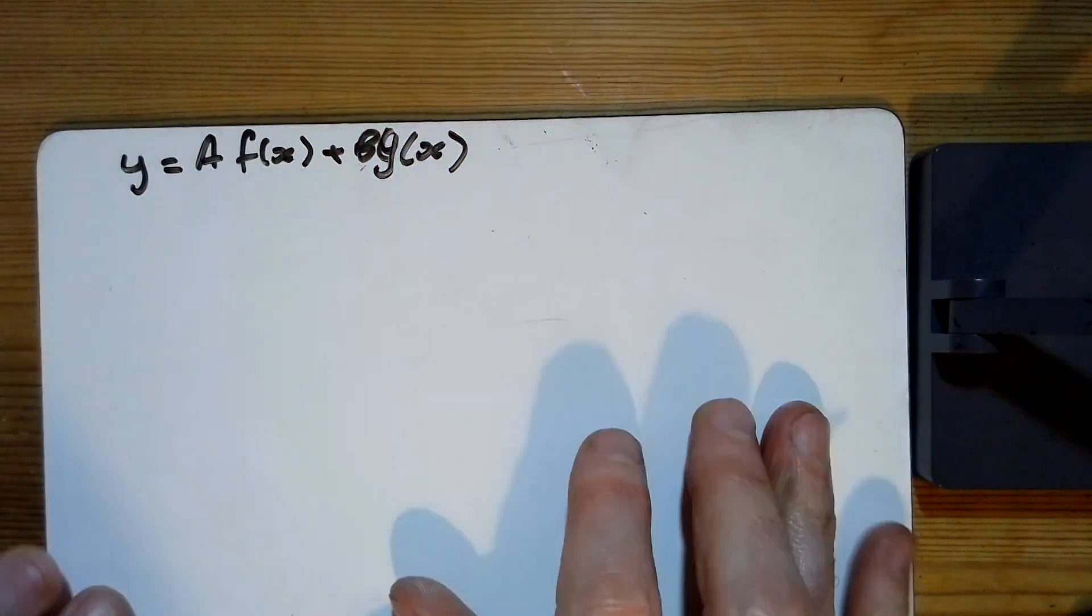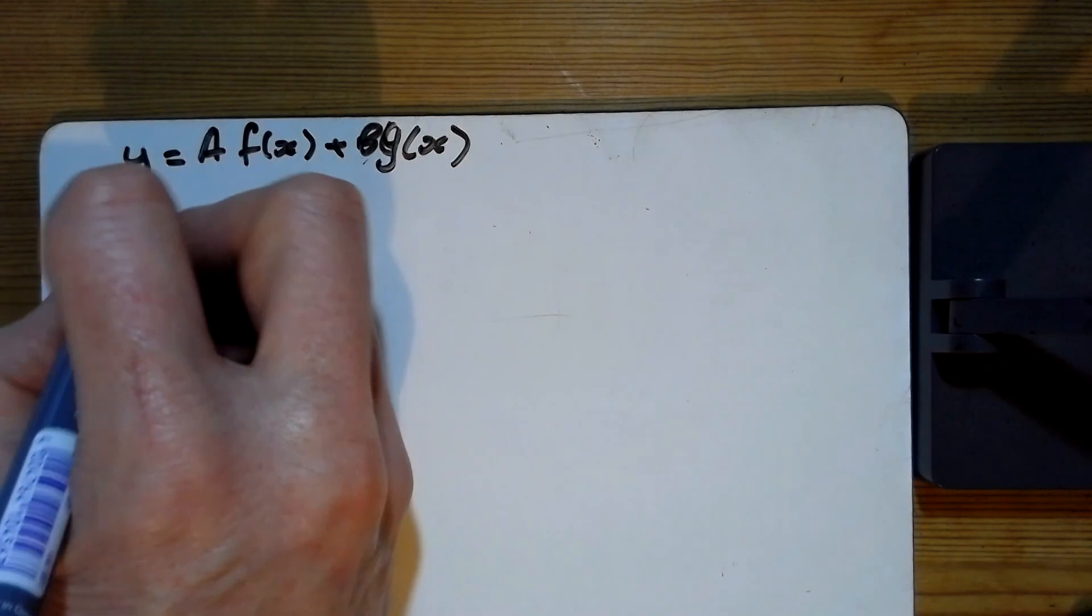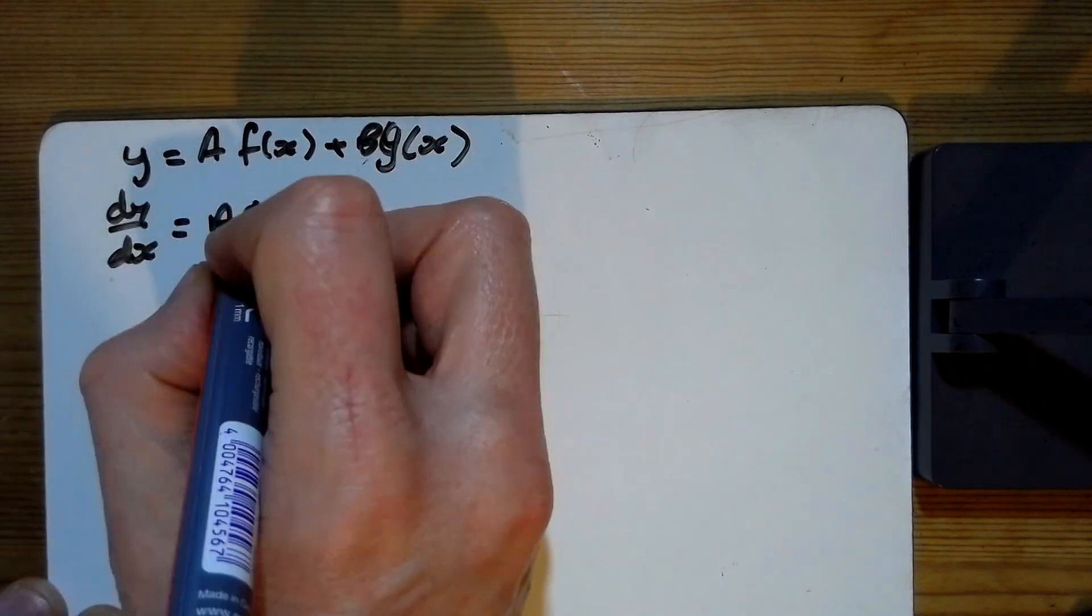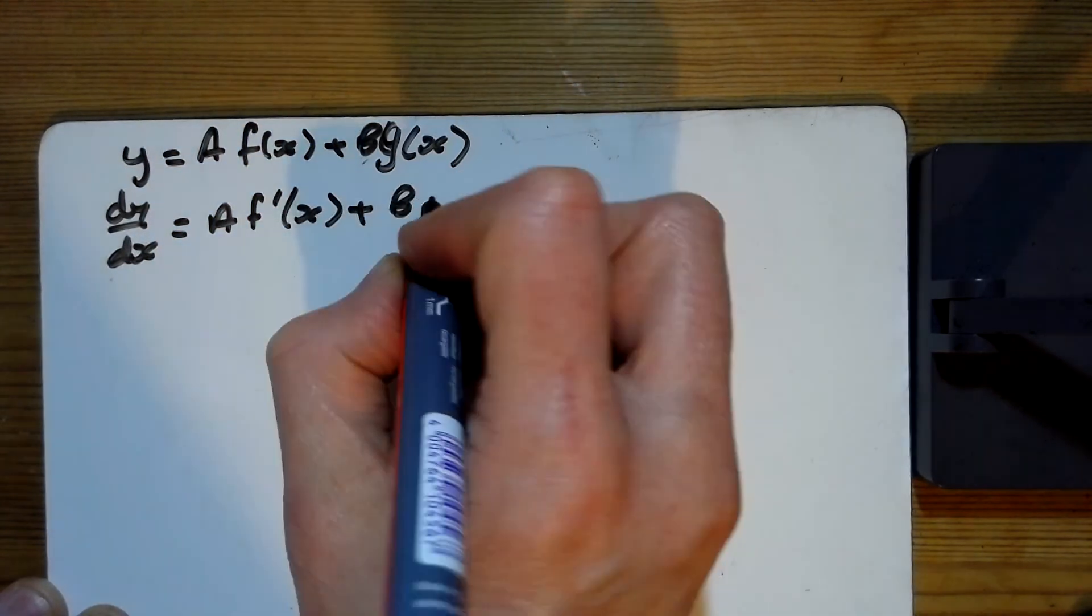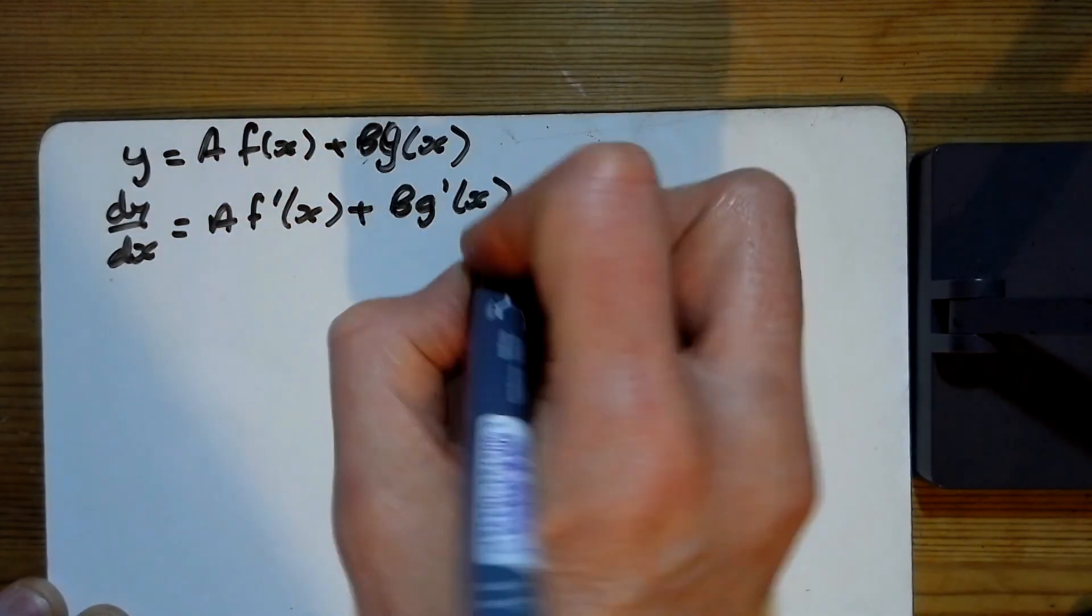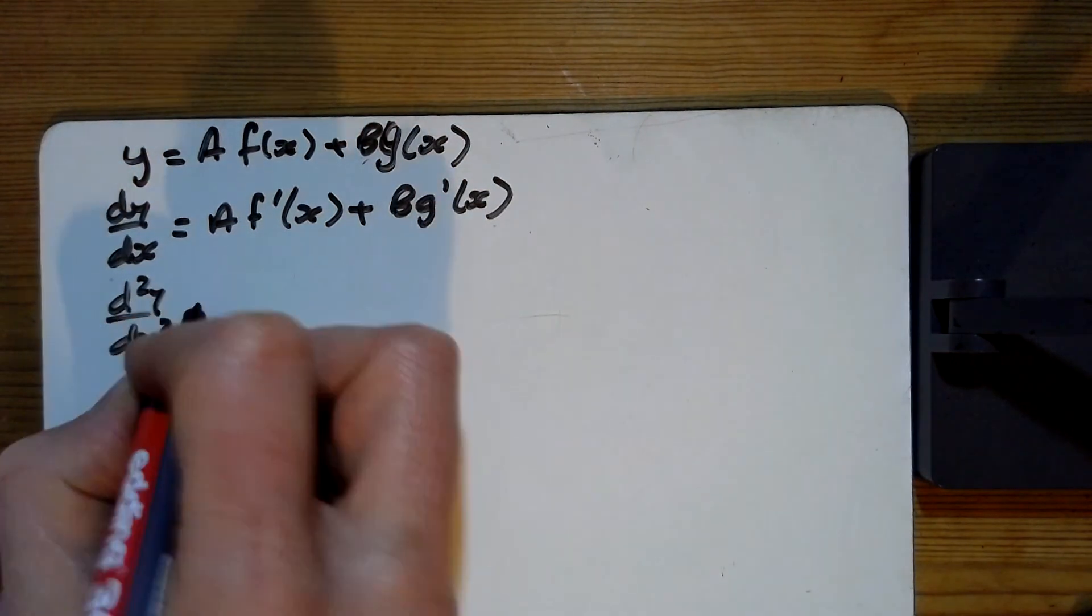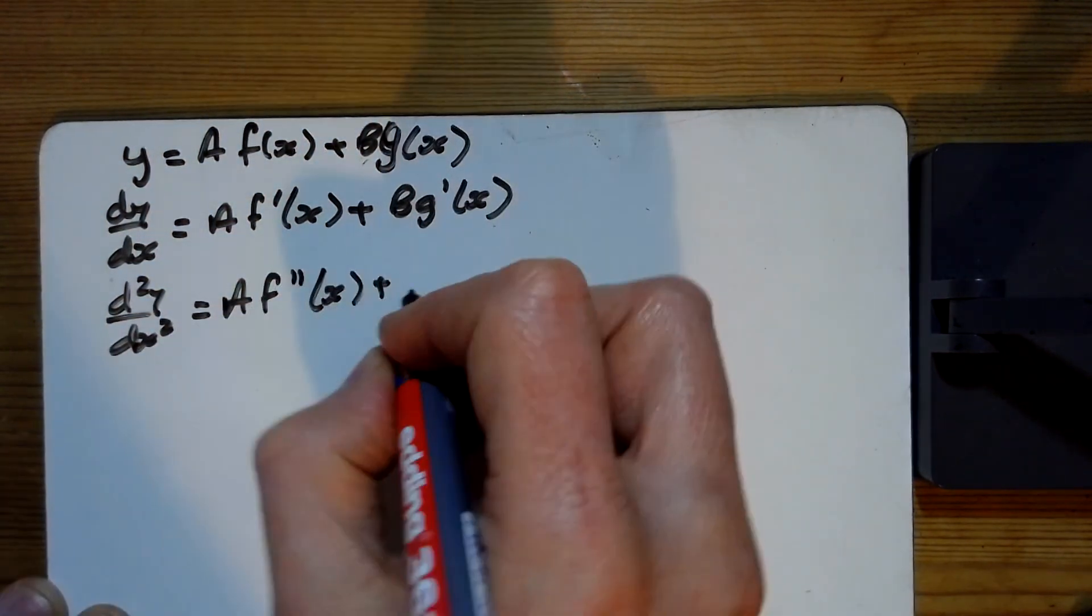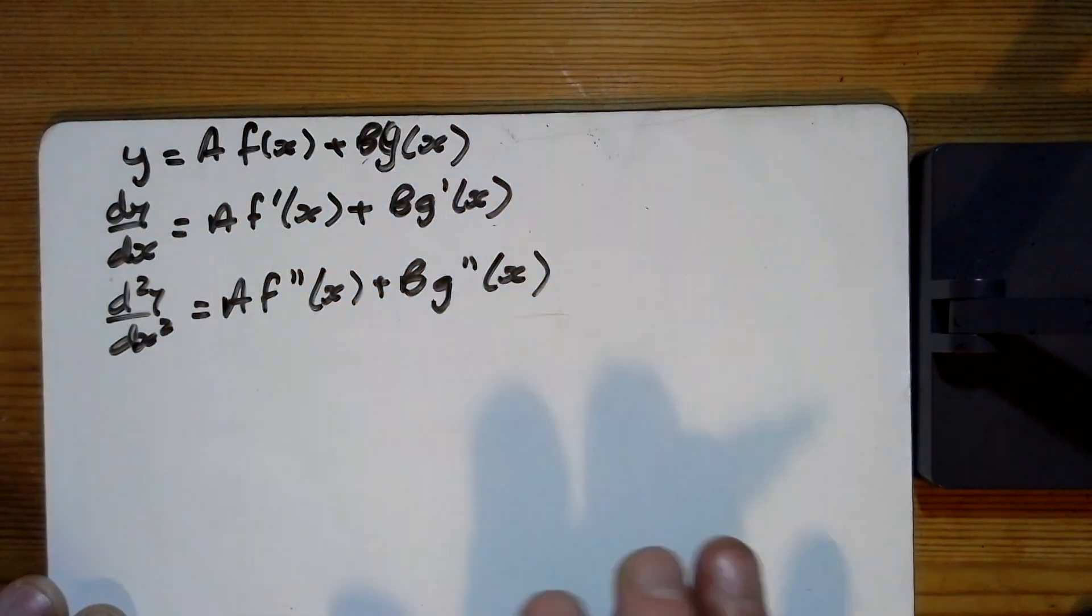Starting with y equals a f of x plus b g of x and differentiating it, we get a f dashed of x plus b g dashed of x. The second derivative of this then is a f double dashed of x plus b g double dashed of x.